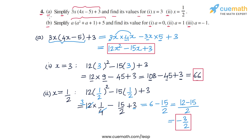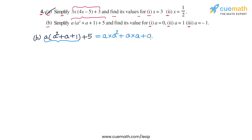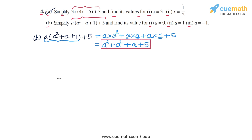Now we come to part b. The expression to simplify is a times (a squared plus a plus 1) plus 5. Expanding using the distributive law, we get a into a squared plus a into a plus a into 1 plus 5. That gives us a cubed plus a squared plus a plus 5. This is the simplified form of the given expression.